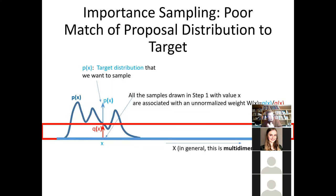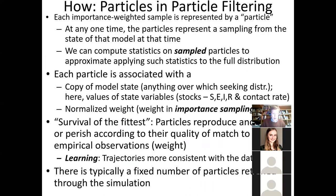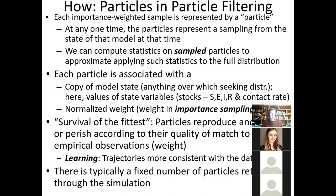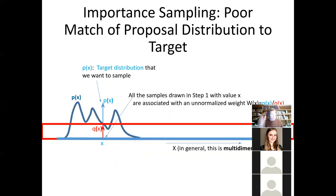Any further questions about this? A student asks: can you explain resampling more concretely? The resampling process can be explained by this graph. Resampling is a process you want to undertake when your effective sample size is too small. If you have particles or samples way out here with very small weights, while samples in the center region have much higher weights because each is weighted by the ratio P of X to Q of X — then it's wasteful to carry all those low-weight particles.